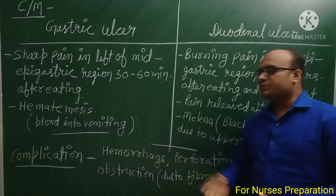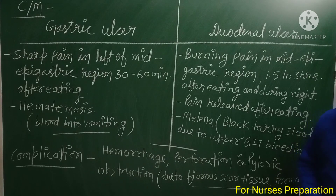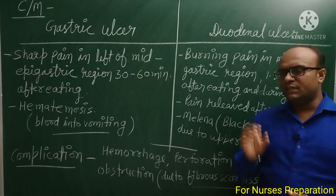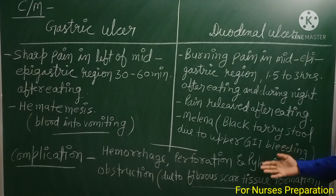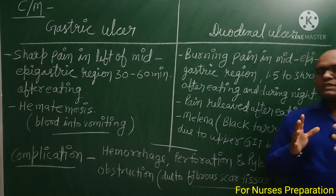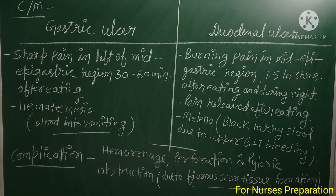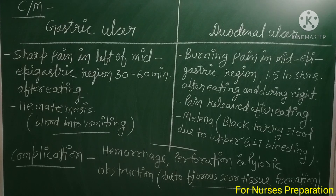अब ulcers के कारण होने वाले complications की बात करते हैं। पहला है hemorrhage — bleeding होगी। दूसरा है perforation — ulcer वाली region पर छोटी-छोटी openings बन जाना, छिद्रित हो जाना। तीसरा है pyloric obstruction — stomach और duodenum जहाँ connect होते हैं उस pyloric region पर fibrous scar tissue formation हो जाएगा जिससे obstruction आ जाएगा। ये important complications हैं: hemorrhage, perforation, and pyloric obstruction।